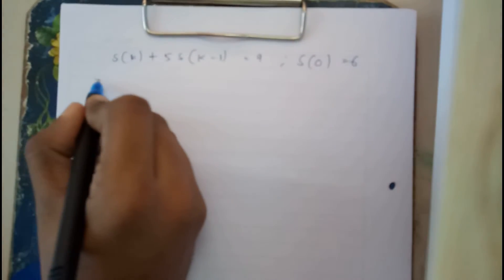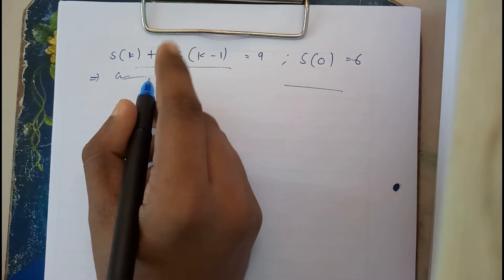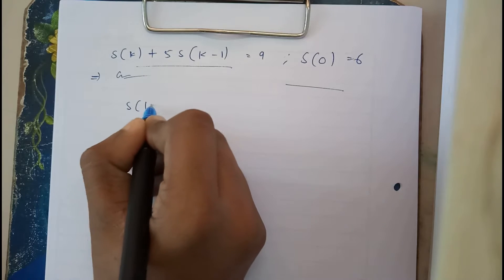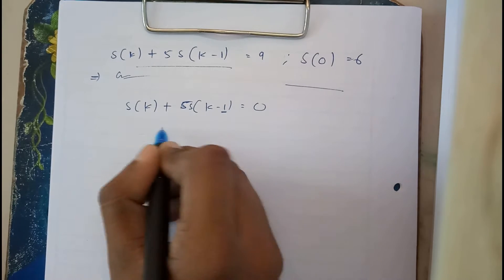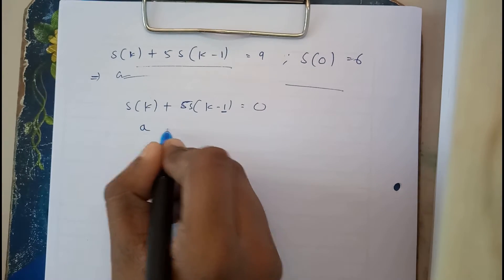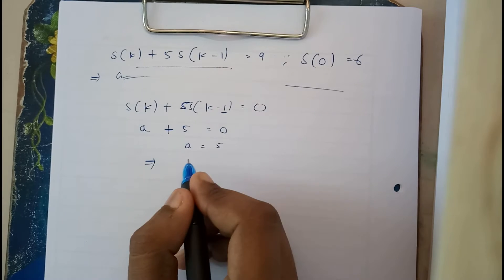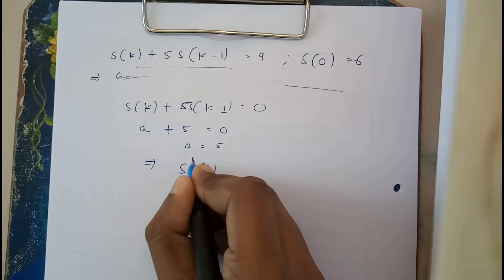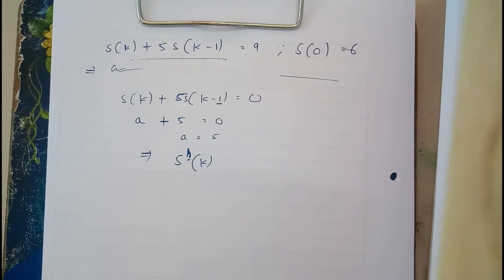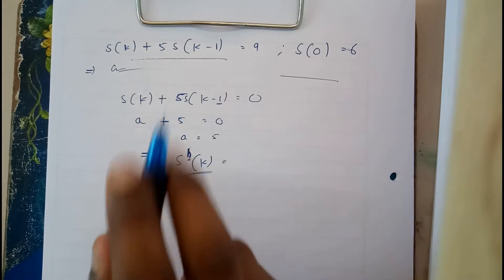The given equation is s(k) + 5·s(k-1) = 9 and s(0) = 6. Finding the characteristic equation means treating this as a homogeneous equation: s(k) + 5·s(k-1) = 0. We take the characteristic root — using letter 'a', we get a + 5 = 0, so a = -5. For non-homogeneous equations, we denote the homogeneous solution as s^h(k), with the 'h' indicating it is the homogeneous part of the solution.